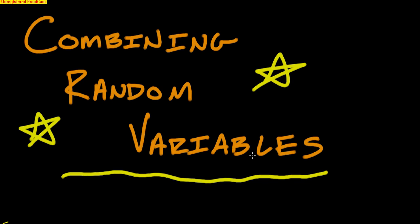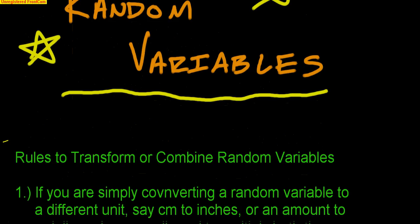In this video we're going to learn how to combine random variables together. Hopefully you watched the first video over what random variables are, because now we're going to talk about combining them together. We'll learn a couple of rules, and then every time we learn a rule, we'll actually put it to use.